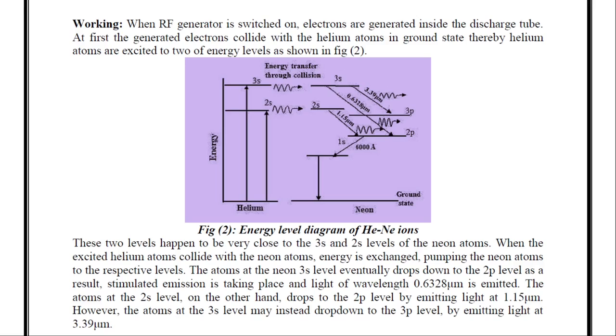However, the atoms at the 3s level may instead drop to the 3p level by emitting light of 3.39 micrometer. That means, from 3s atoms may come down to 3p level by emitting a light of wavelength 3.39 micrometers. By this way, we will get laser light of different wavelengths using helium-neon laser.